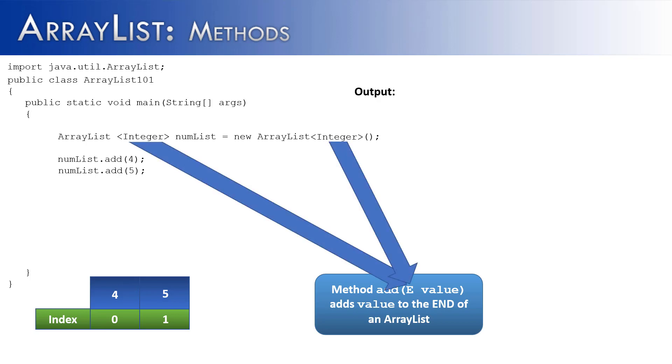You'll notice that it's taking an E value. What is this E? Don't worry about it too much, it just stands for element. And element just means the data type that the ArrayList is. So if it's integer, it's going to be integer. If it's double, it's going to be double. Whatever object the ArrayList contains, that's what that E is going to represent.